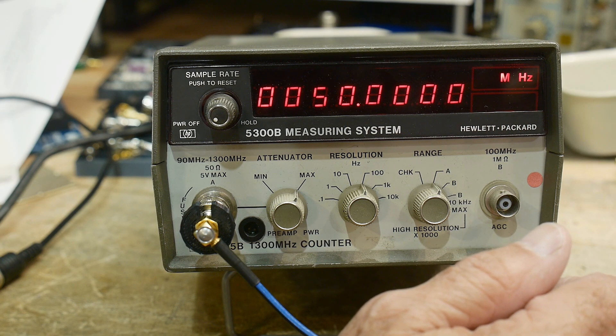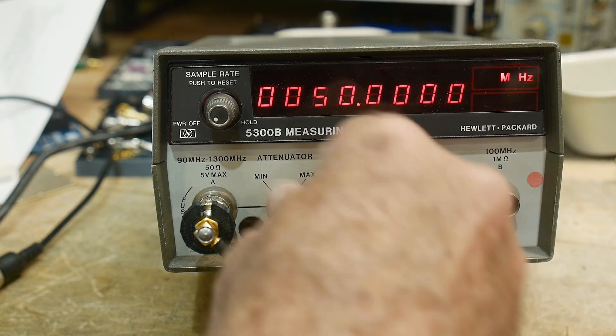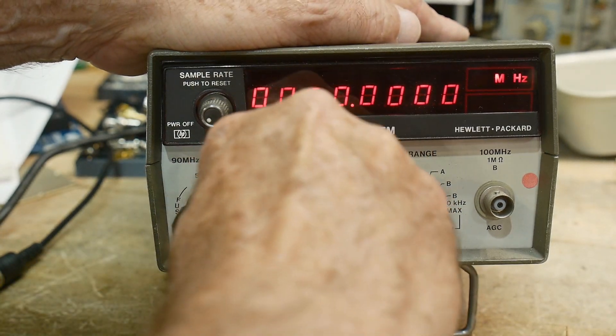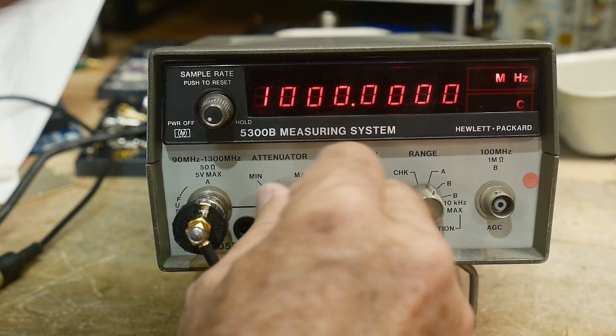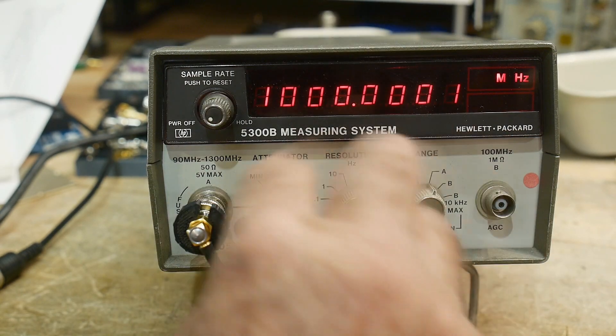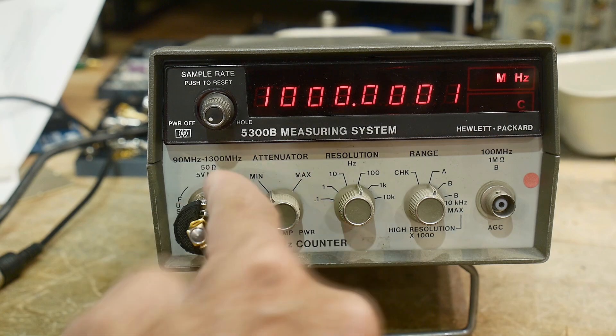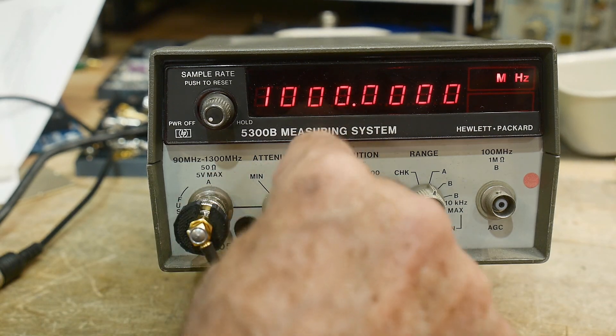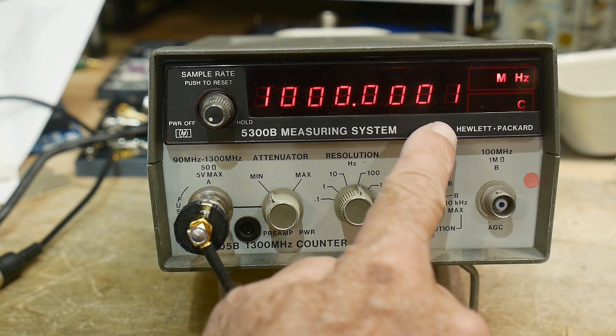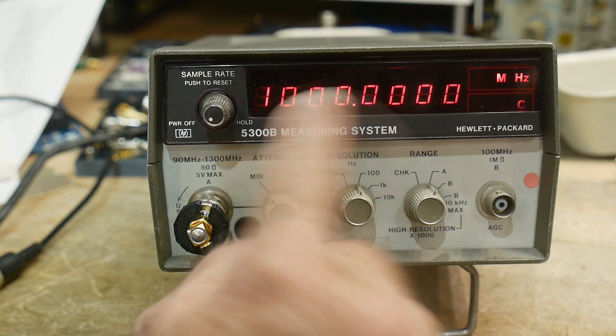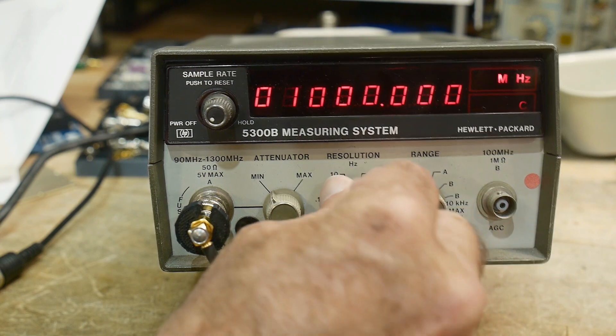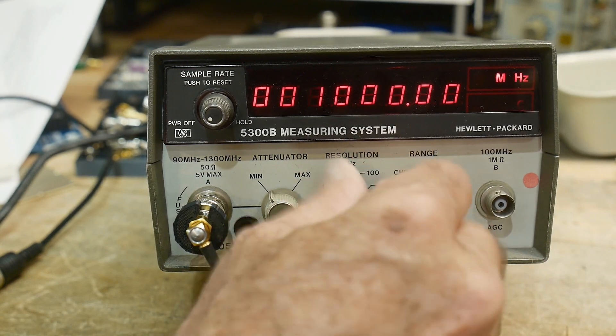I'm not seeing any signal and that's because I have the attenuator set to max. If I set the attenuator to min, there we go. This is a turn, I thought it was a click, but it's a turn. Minimum attenuation on the input, maximum attenuation on the input it couldn't see it. So here on minimum you can see that we're now counting one gigahertz or a thousand megahertz.